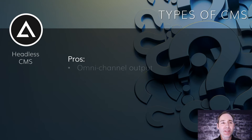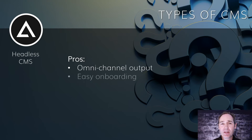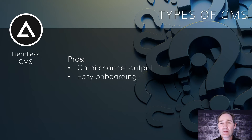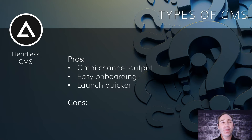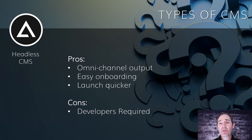For the pros, we have what we call omni-channel output — your content can go to lots of different websites, apps, signage, anywhere. It also tends to be really easy to get on board with these systems; they're a lot simpler. And you can launch much more quickly, which is a really big deal when you're planning something out. You start with the content, and the websites and apps can get built really quickly. One consideration is that these things need to be built by developers, so developers are required.